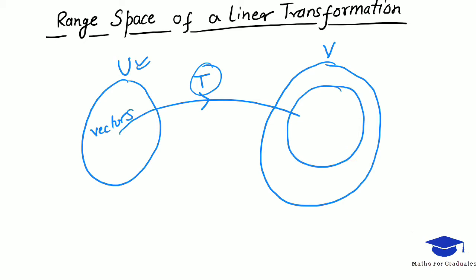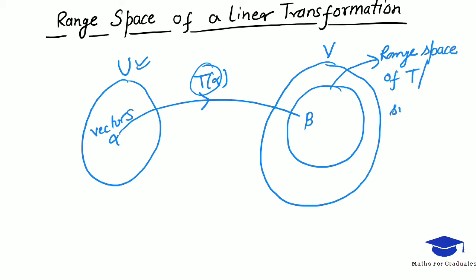If alpha is inside U, then T of alpha maps to some vector inside V. Suppose I call that vector beta. Then if I collect all those betas which are having a preimage in U, then this set is called the range space of T, and this range space is a subspace of V.